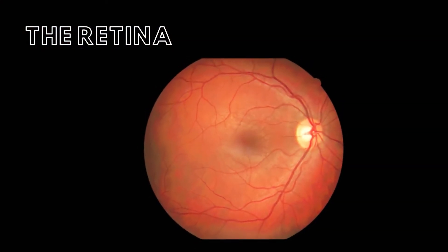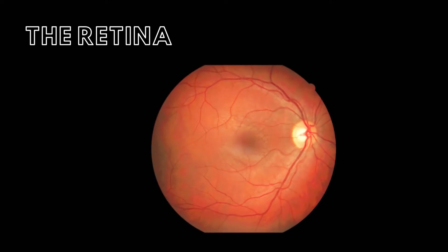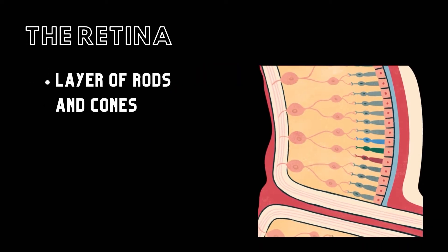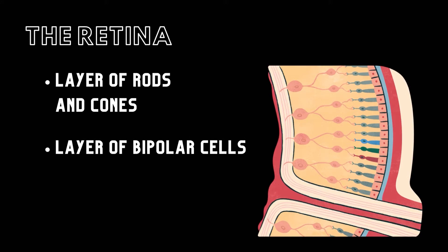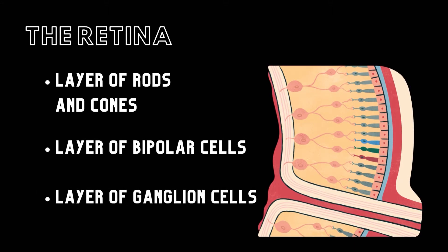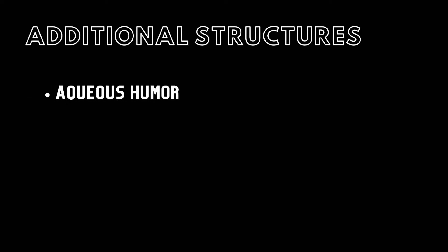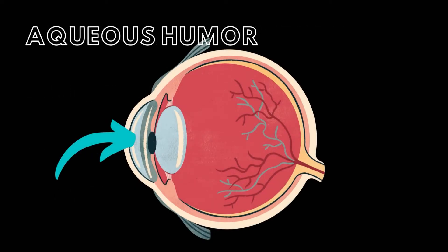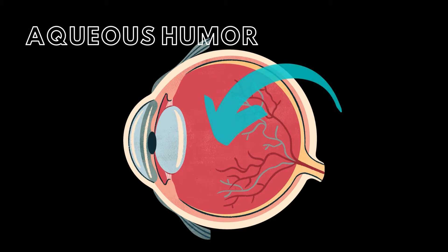The retina is made of an outer pigmented layer and an inner nervous layer. This nervous layer has multiple sub-layers. Three of these layers are the layer of rods and cones, a layer of bipolar cells, and the layer of ganglion cells, whose axons contribute to the formation of the optic nerve. Three additional structures within the eye are the aqueous humor, the vitreous body, and the lens. The aqueous humor fills the anterior chamber of the eye, which is the space between the cornea and the iris. The vitreous body fills the posterior chamber of the eye, which is the larger space behind the lens. It is a gel-like fluid that helps the eye maintain its shape.